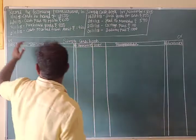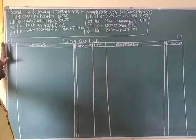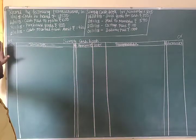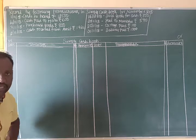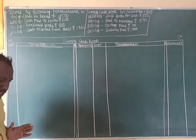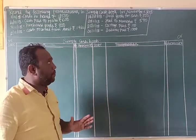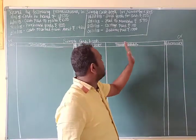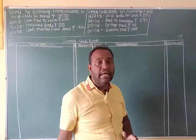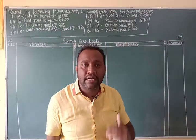In the simple column cash book, the debit side should be taken as receipts — receipts meaning income. On the credit side, we should record payments — payments meaning expenses.